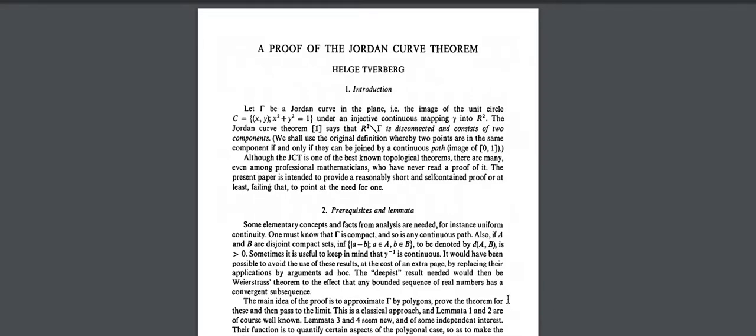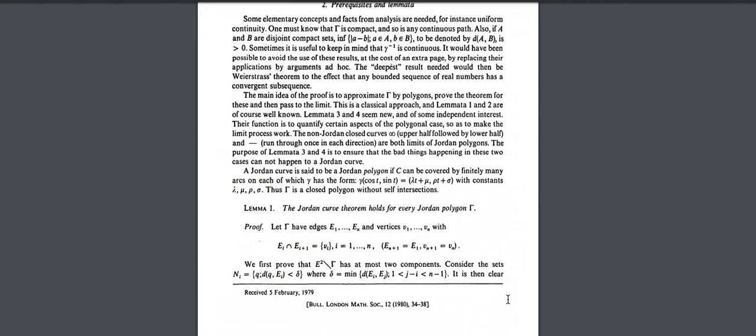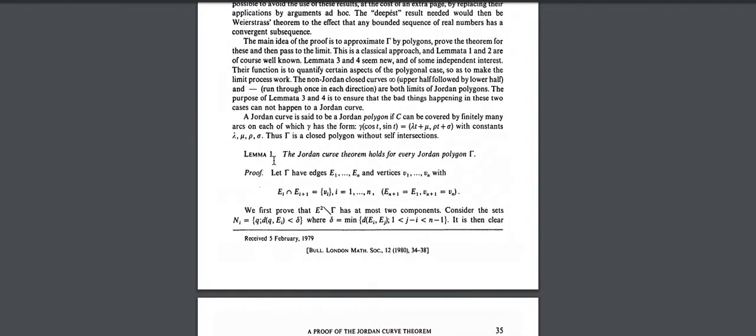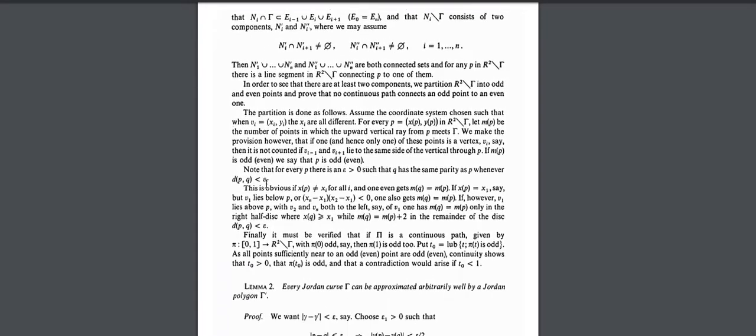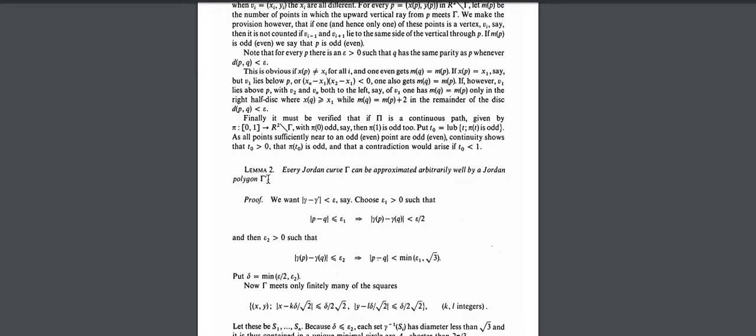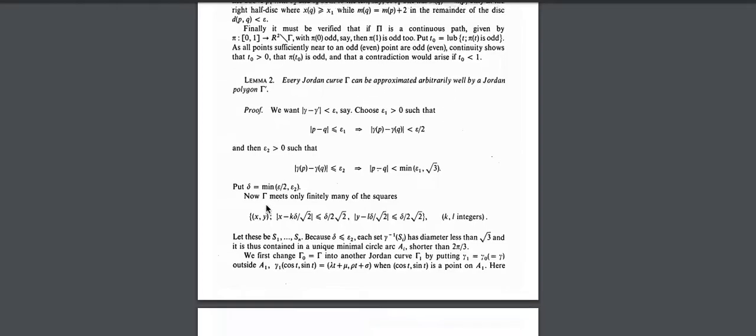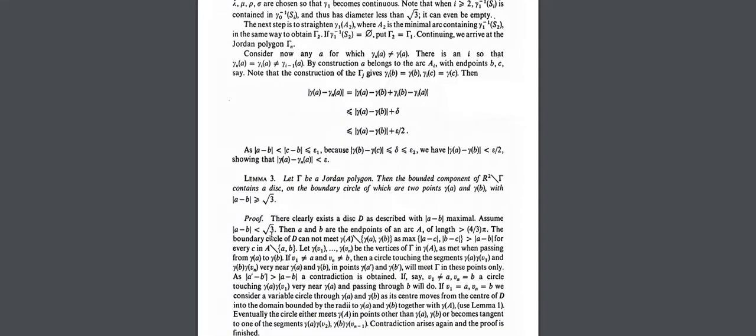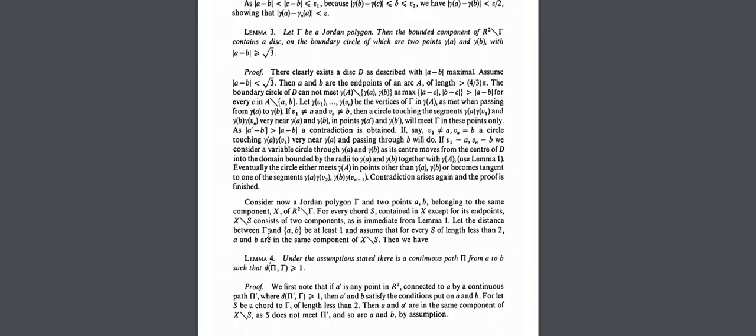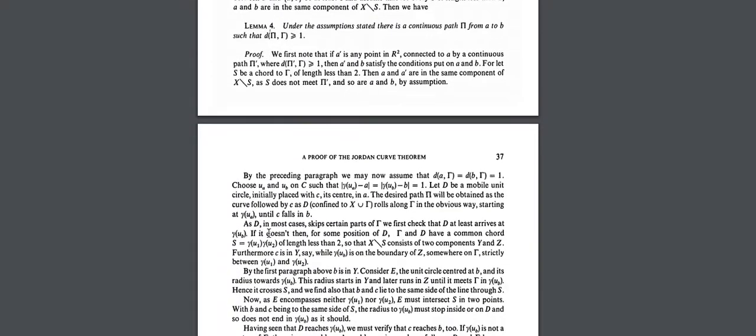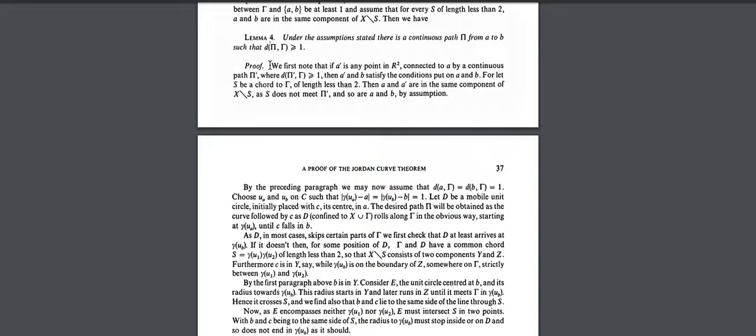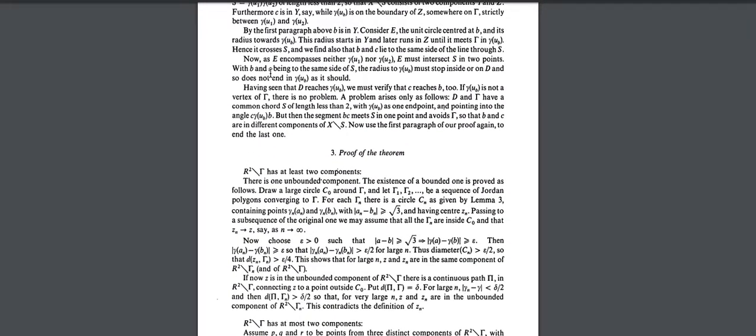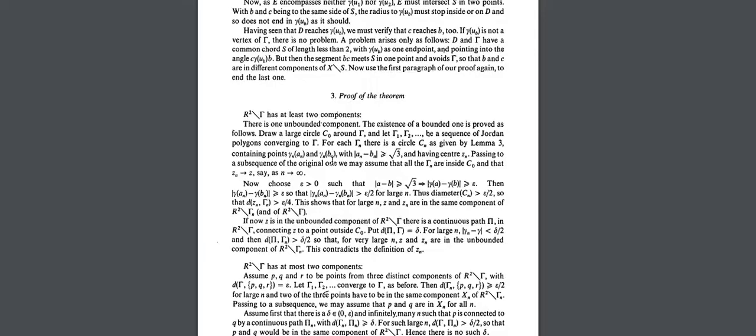So to rigorously prove the Jordan Curve Theorem, you have to do something like this, which is a lemma with a proof, lemma two and its proof accompanying it, a third lemma and its proof, and finally a fourth lemma and its proof before you get to proving the actual theorem, which starts here.